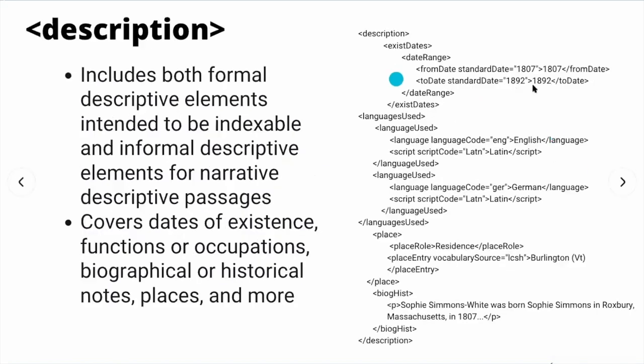The Description section of the EAC-CPF record includes both formal descriptive elements intended to be indexable and informal descriptive elements for narrative descriptive passages. It covers such things as dates of existence, functions or occupations, biographical or historical notes, and places relevant to the entity being described.